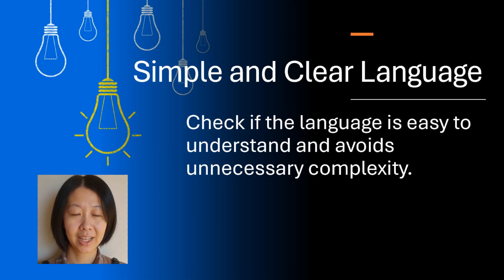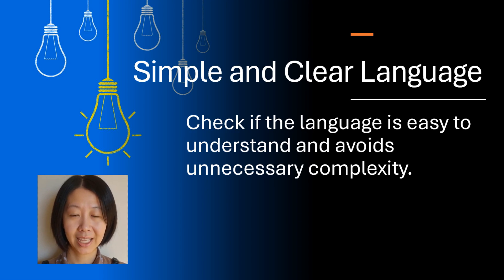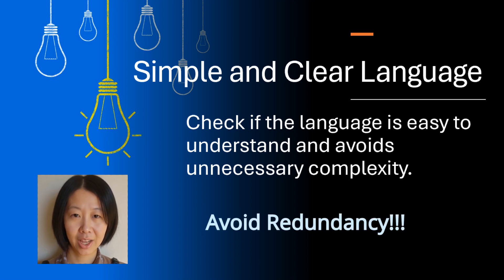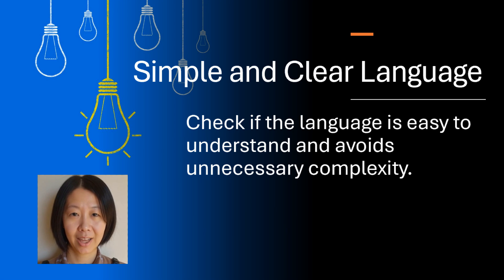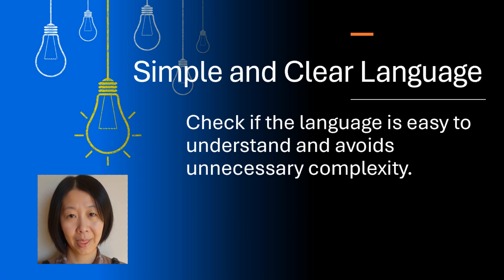Using simple and clear language is crucial in making your essay accessible and engaging for your audience. Overly complex sentences can confuse readers and obscure your main points. Avoid unnecessary jargon or overly technical terms unless they are essential to your argument. Remember, your goal is to communicate effectively, not to impress with difficult vocabulary. ChatGPT can help you identify areas where the language might be too complex and suggest simpler alternatives. Use its feedback to refine your essay, ensuring that your ideas are clear and impactful.